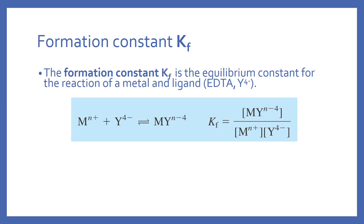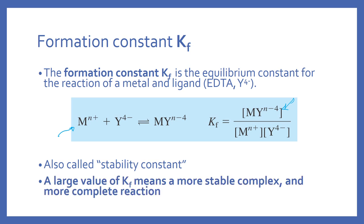The equilibrium here is the complexation reaction. Any metal M with a certain positive charge reacts with EDTA — Y4- is the typical abbreviation. The formation constant Kf is the concentration of the complex over the concentrations of free EDTA and the metal. This is also called the stability constant. A large Kf means a very stable complex that is likely to form, and therefore your reaction is more complete.